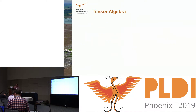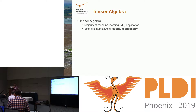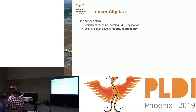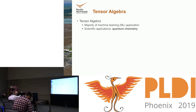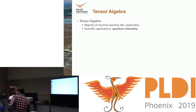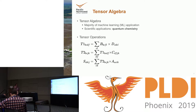Tensor algebra is almost everywhere because it's a major component in machine learning and most scientific applications that do some kind of simulation. Today I will be focusing on quantum chemistry. The tensor operations are usually embedded into mathematical formulas in quantum chemistry papers, and application writers have to find and decipher these methods and write code that does the tensor operations.